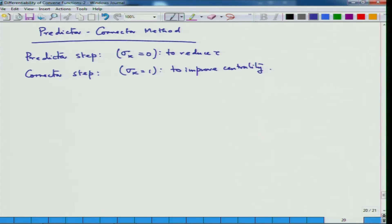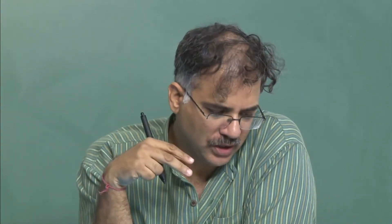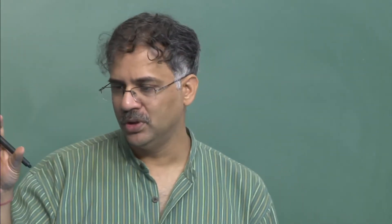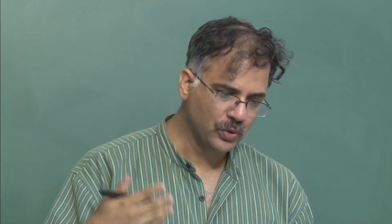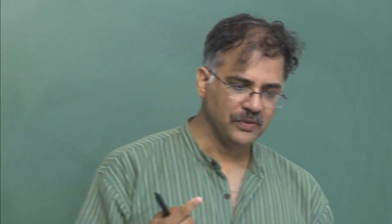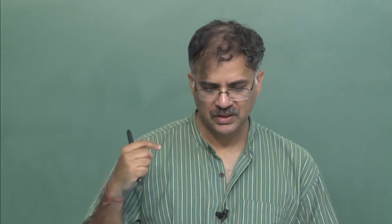This is something we will discuss tomorrow, because here we use two values of theta also: one for the predictor step and another for the corrector step. We start with a point in one neighborhood and when we improve our values we go to another neighborhood. So there is a starting neighborhood, a predicted neighborhood, and a corrected neighborhood.